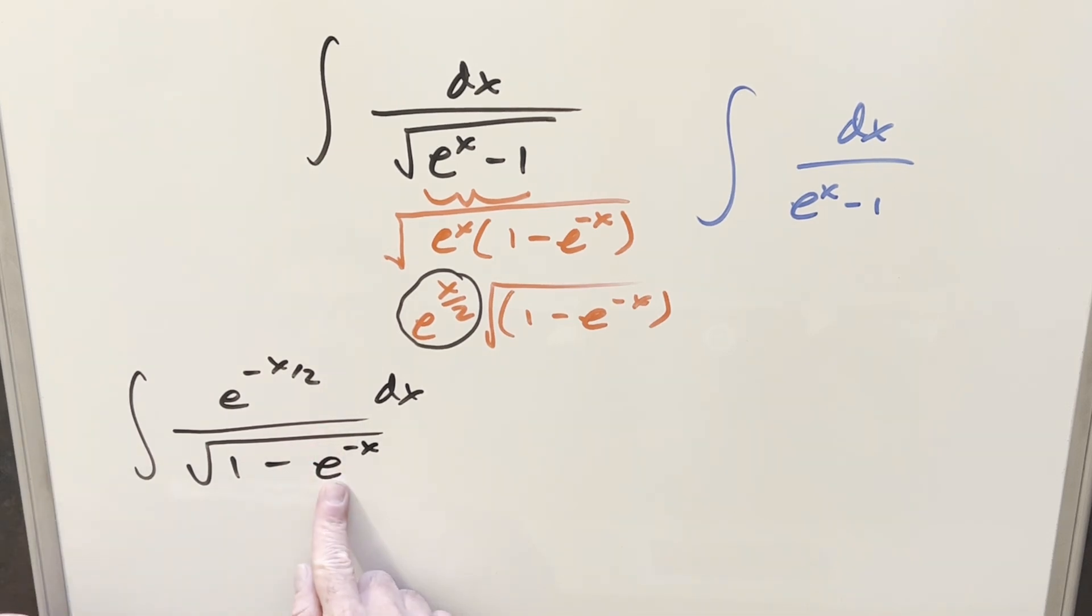So what I want is, I want the exponent to be the same on this and this. Well, that's pretty easy to fix. Instead of writing it as e to the minus x, I can write it as e to the minus x over 2 all squared. And then doing it like that, we'll do our u-substitution for just this right here, and that's going to work well with what we have in the numerator.